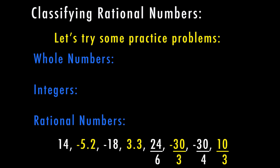Let's practice putting numbers into categories. At the bottom is a list of numbers, and on the left side we have each category listed. Starting with 14 — it's a whole number, an integer, and a rational number. Next, negative 5.2 is negative and has a decimal, so it fits only into the rational number category. Then negative 18 — 18 is a whole number, but negative 18 is not, so it fits into the integer category and the rational number category.